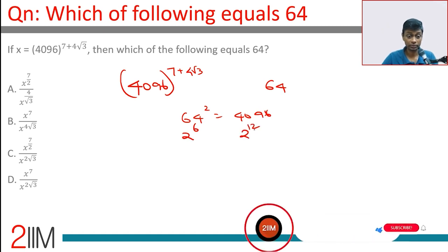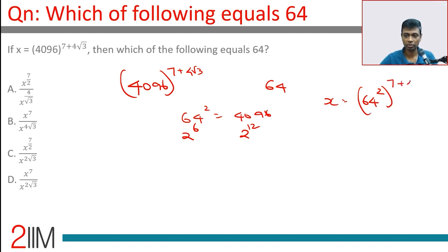That is helpful, so the square root idea is involved here somewhere. And so x can be written as 64 squared, whole to the power 7 plus 4 root 3. Wonderful, so that could be helpful.